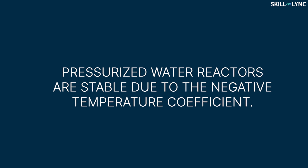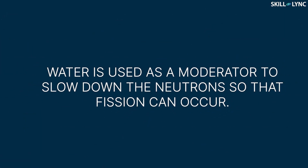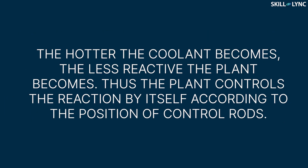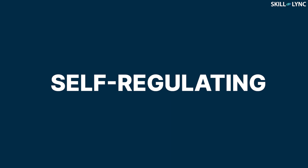One interesting property that makes pressurized water reactors very stable is the negative temperature coefficient. Water is used as a moderator in pressurized water reactors because water molecules slow down the neutrons to facilitate nuclear fission. But when the temperature of water increases, it expands, making it less dense. So, the probability of slowing down the neutrons decreases, which reduces the rate of reaction. Therefore, if the rate of reaction increases beyond normal, the moderation of neutrons will be reduced due to the expansion of water and the chain reaction will slow down. This property is called the negative temperature coefficient and the process is referred to as self-regulating.